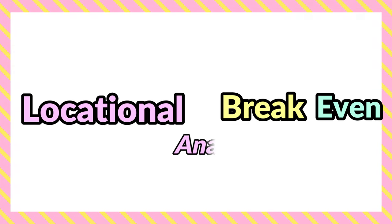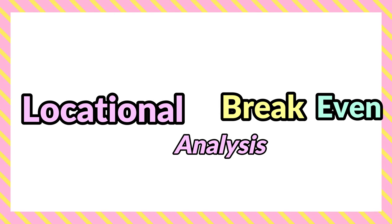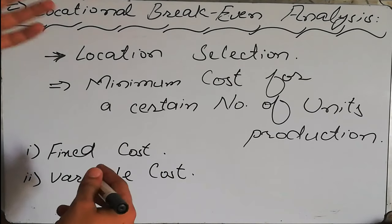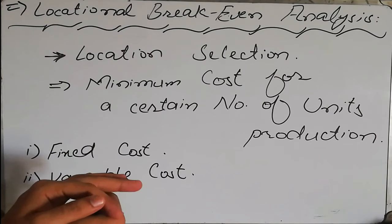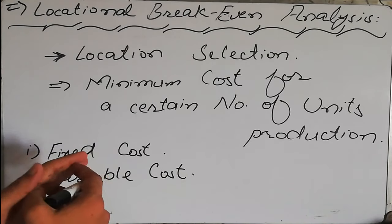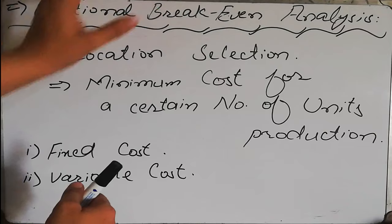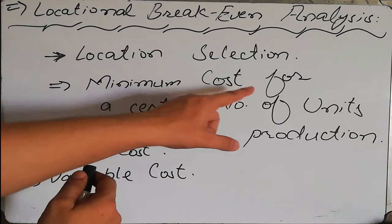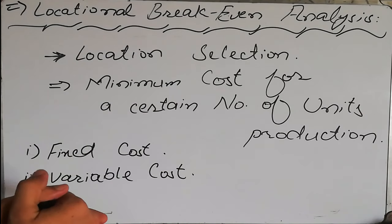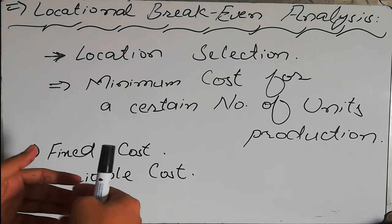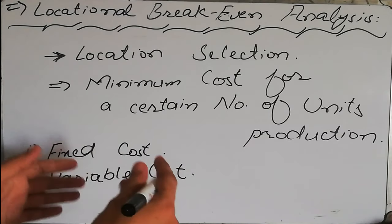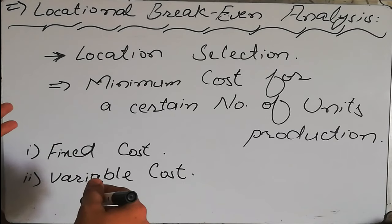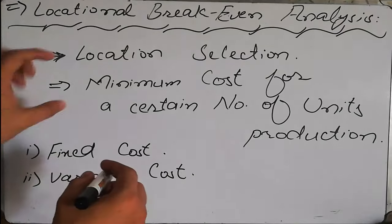Hello and welcome back to MACDOT. This topic is about locational break-even analysis. Locational means we have to find out and select a location. We will be selecting a location based on break-even analysis, where break-even is the point where costs collide. For selecting a location, we need to select the one with the minimum cost for a certain number of units produced.